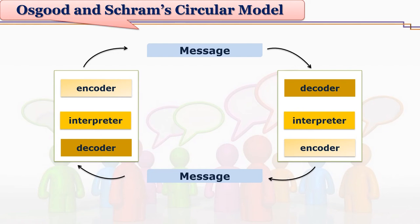The message is again encoded and sent to the other person. The other person decodes the message, interprets it, and again encodes a new message. This circular model is proposed by Osgood and Schramm.